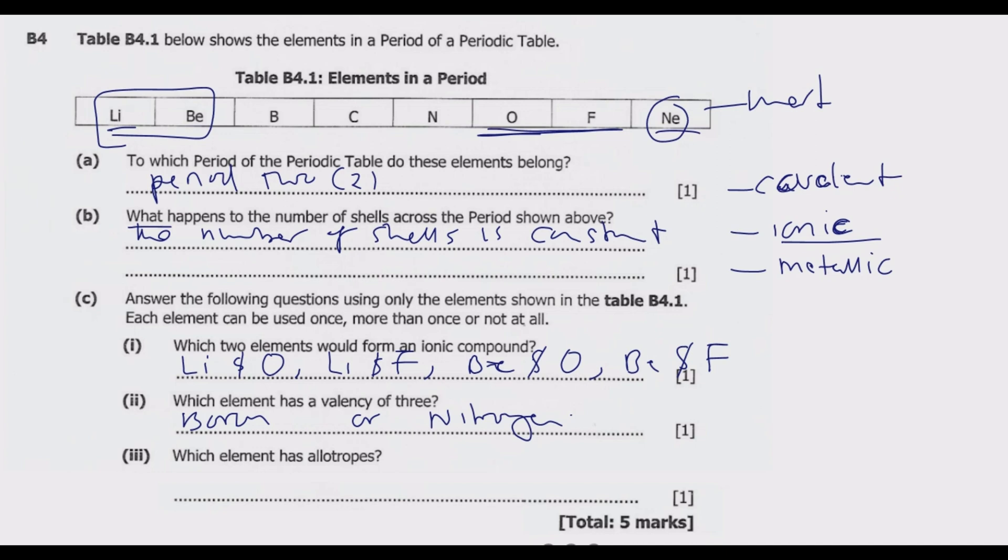Part C(iii): which element has allotropes? So the first thing we need to understand: what is an allotrope? When we're talking about an allotrope, we're talking about different forms of an element. For example, diamond and graphite are both carbon, and these are allotropes of carbon. Then we also have allotropes of oxygen, which are oxygen gas and ozone. So in this case, carbon, among these elements, has two allotropes, which are diamond and graphite. Take note of all these and know their shapes.